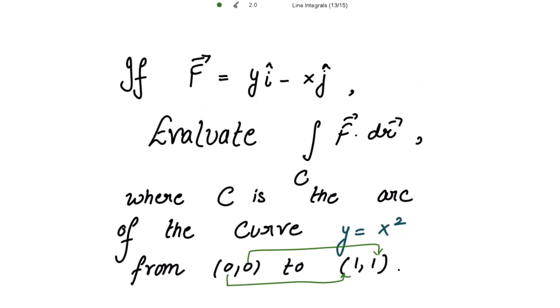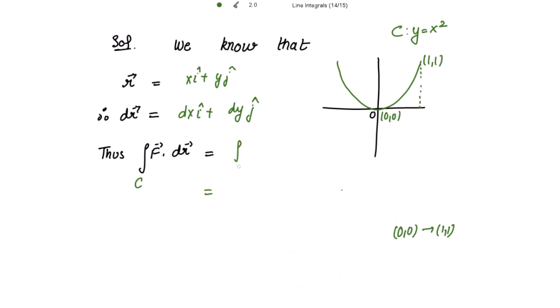The integral of the dot product of F vector with dr vector: F vector is y i cap minus x j cap, so it is the integral of y i cap minus x j cap dot product with dr vector, that is dx i cap plus dy j cap. Taking the dot product we get y dx minus x dy.